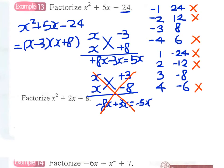It is always good practice to check our answers by expanding — we simply reverse the process. Minus 3 times 8 gives minus 24; x times x gives x squared; minus 3 plus positive 8 gives plus 5x. After checking, we are sure that the answer is correct.